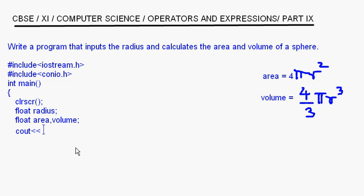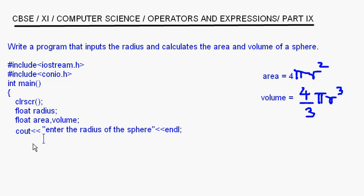Now let us come back to the code. First of all we need to know the radius of the sphere so that we can calculate the area and volume. So here I write cout: "Enter the radius" and the user will enter it, so cin radius — that goes into the variable radius.